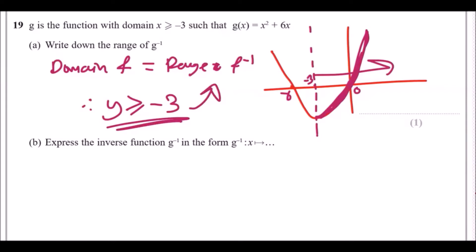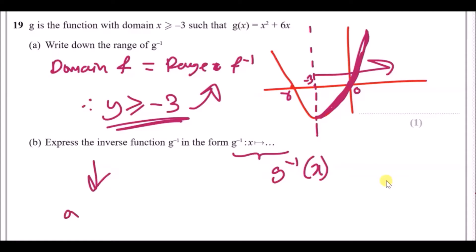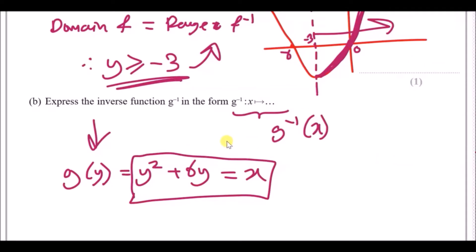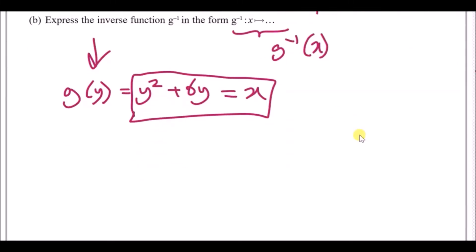Express the inverse function g⁻¹ in the usual form. To do this, look at the g function and replace all the x's with y, so you have g(y) = y² + 6y, and make it equal to x. This is actually a lot more challenging than other inverse problems — even at A-level standard. The way to solve it is to either use completing the square or use the quadratic formula.